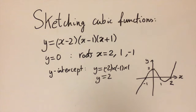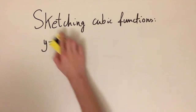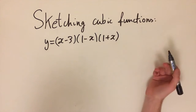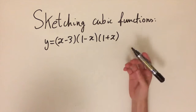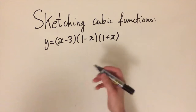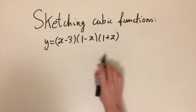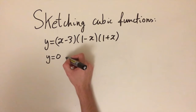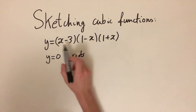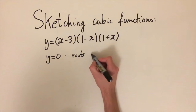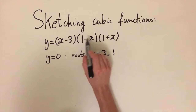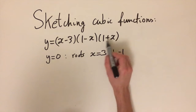We're going to look at a few more examples. This next equation is also in factorized form, which really helps us determine what the graph looks like. Using the same method, we set y equal to zero to find the roots from each bracket individually. The roots are x equals three from the first bracket, x equals one from the second bracket, and x equals minus one from the last bracket.